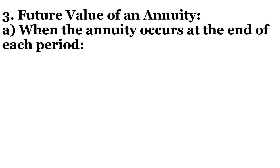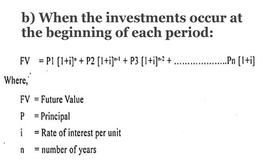Now let's take the second case where perpetuity occurs at the beginning of the year. To find the future value of perpetuity where cash flows occur at the beginning of the year, the formula is: FV = P1×(1+i)^N + P2×(1+i)^(N−1) + … + PN×(1+i)^1, where P1 is the cash flow at the beginning of year 1, P2 at the beginning of year 2, i is rate of interest, and N is number of years.